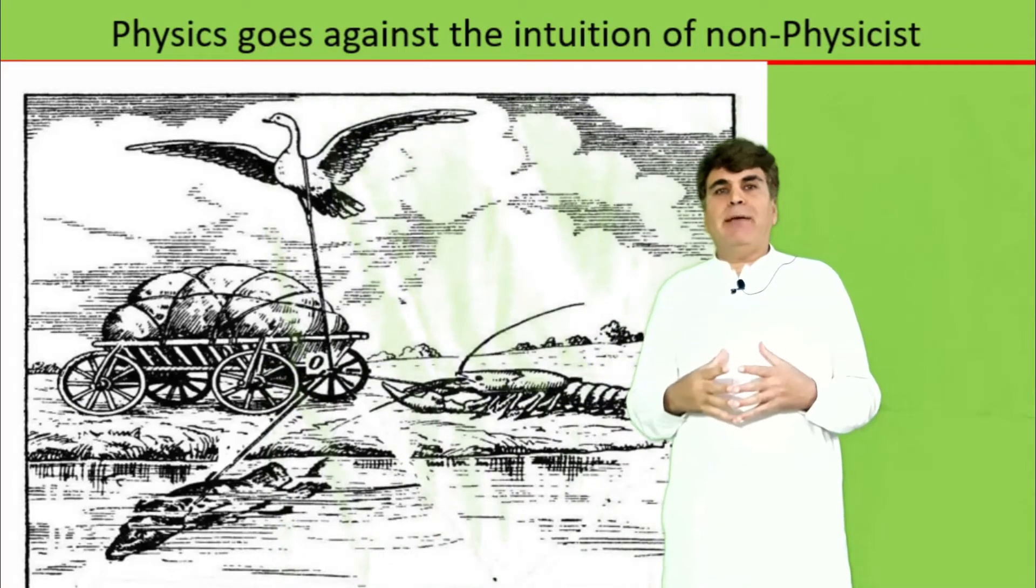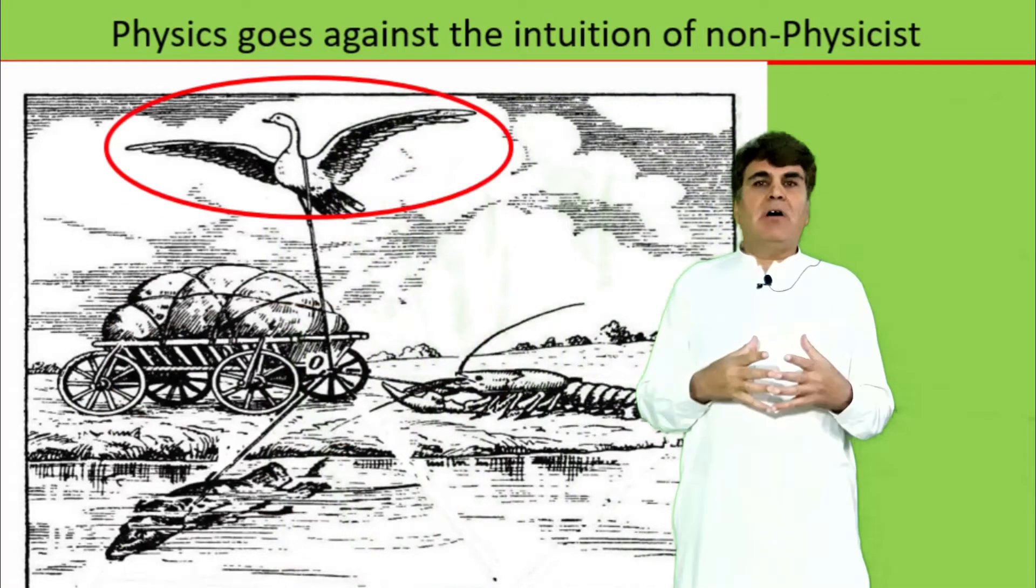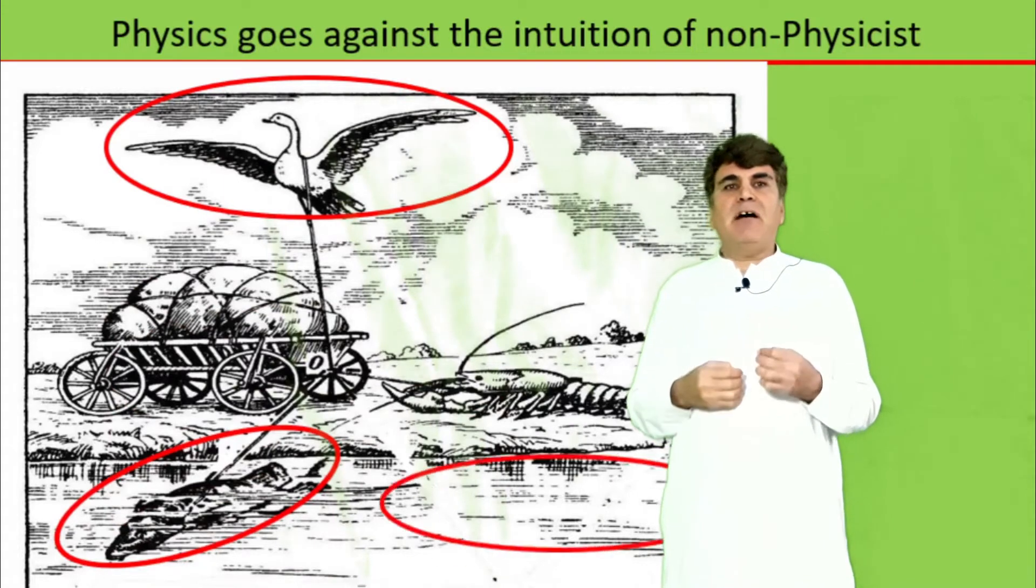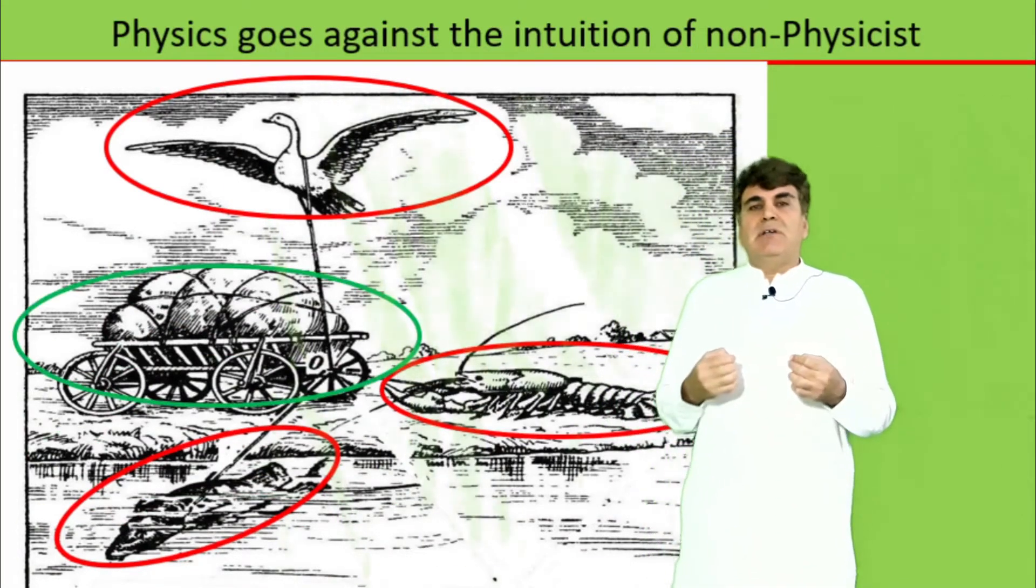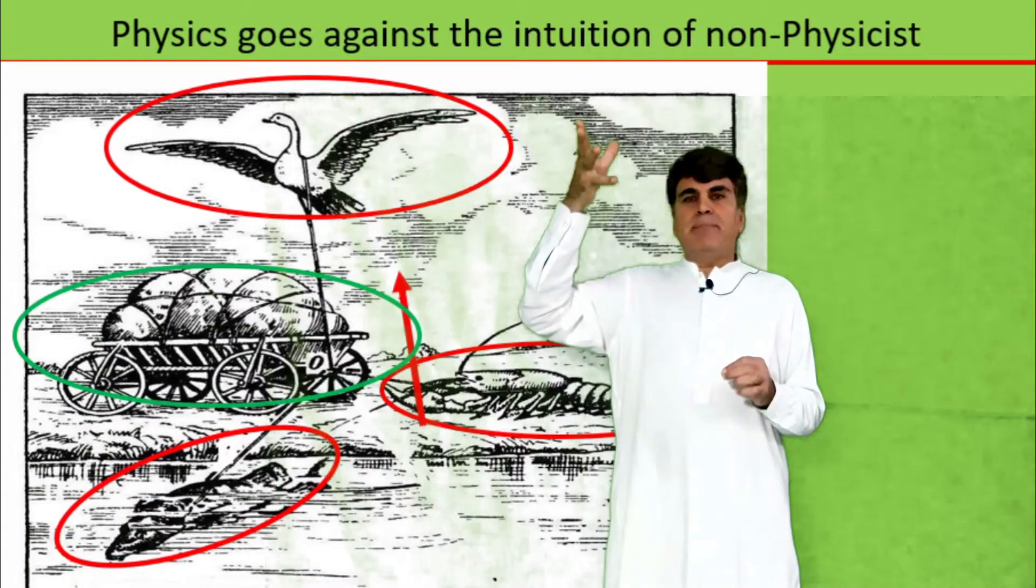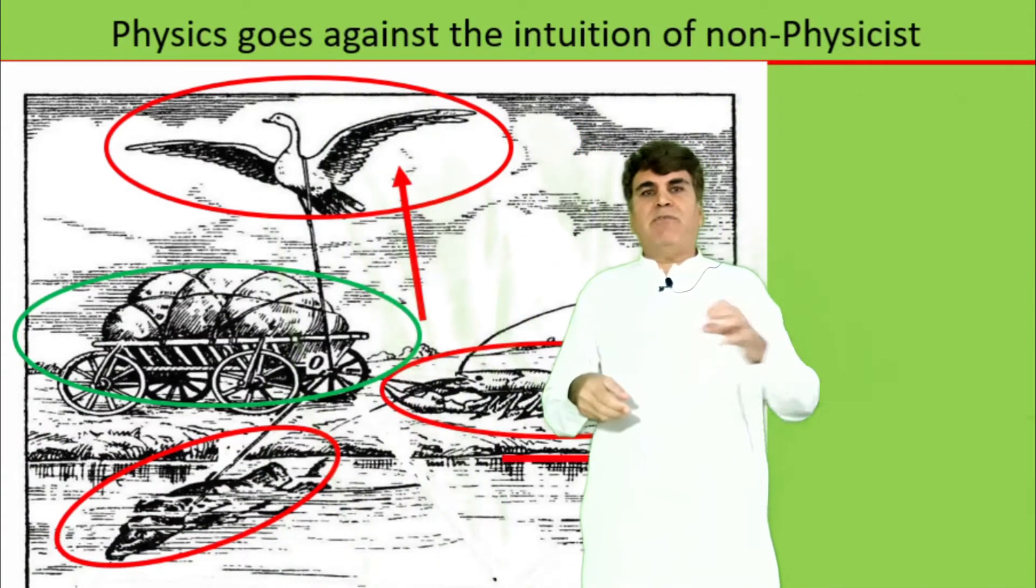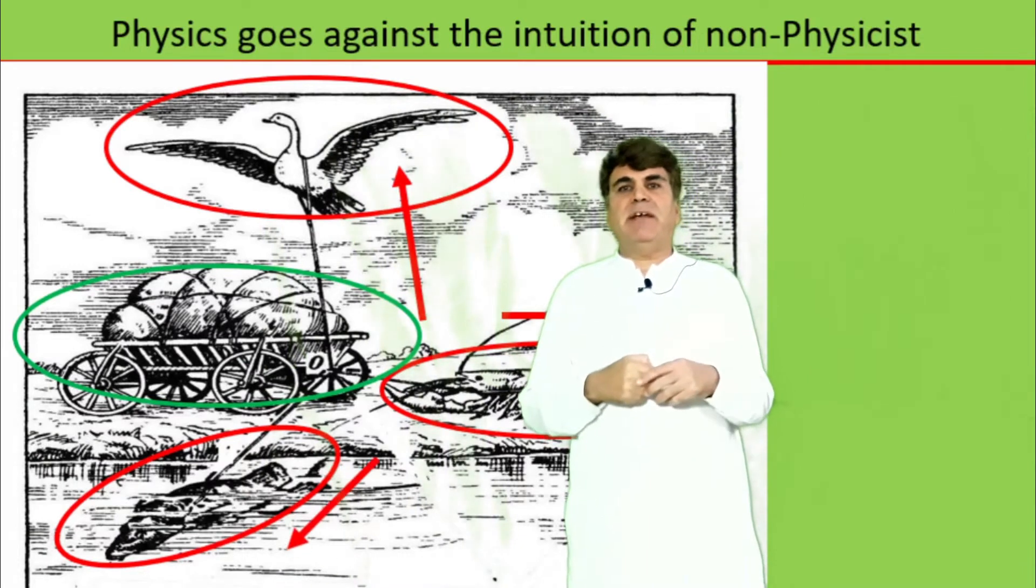The crux of the poem is that three partners, the swan, the pike and the crawfish, are trying to drag a cart. The swan pulls it up, the crawfish pulls it forward, and the pike pulls it into the river.